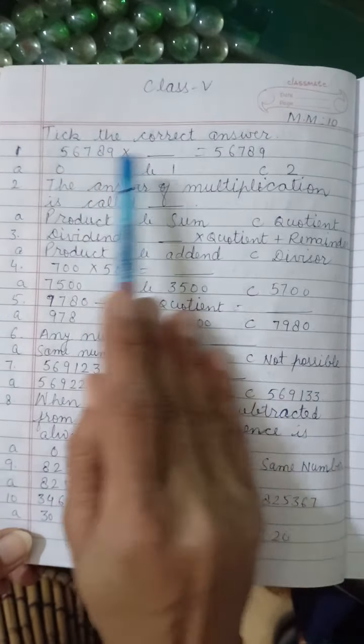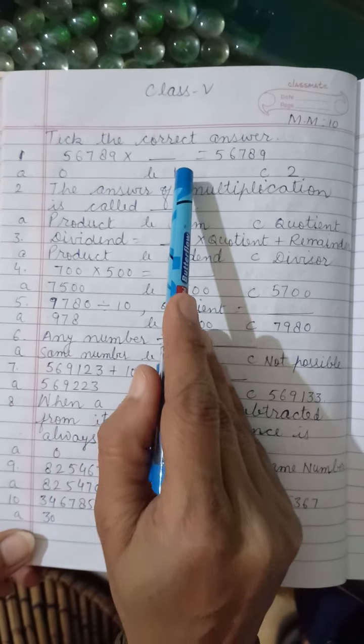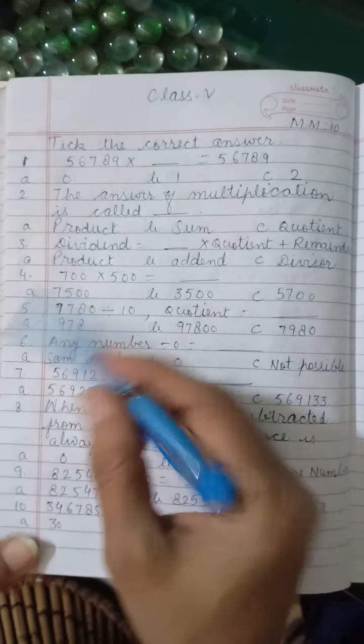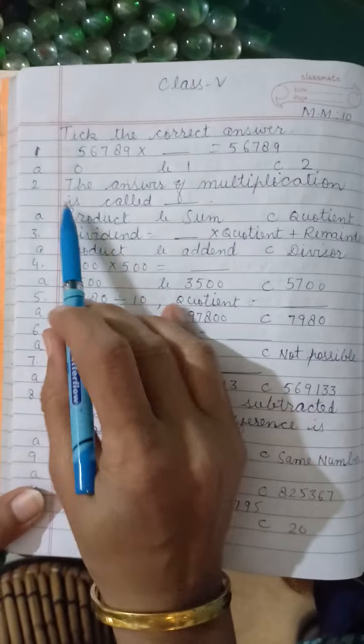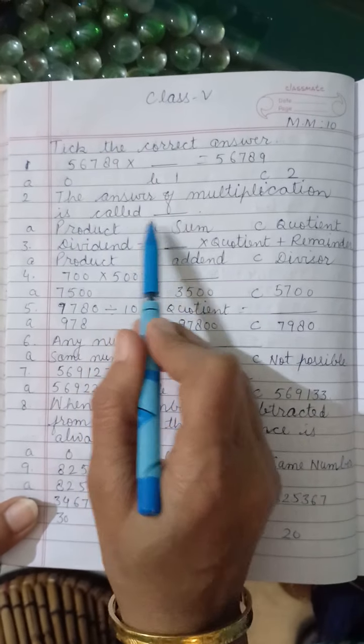This number is same to same. Means this number is multiplied by 1. 1 is the correct answer for it. The answer of multiplication is called...